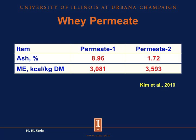Here's an example of why it's important to analyze for ash in feed ingredients. We have two different products, both called whey permeate. Whey permeate 1 contains 8.96% ash, but whey permeate 2 contains only 1.72% ash. We can see how that influences the concentration of metabolizable energy: permeate 1 contains 3,081 kcal per kilogram dry matter, whereas permeate 2, with the low ash concentration, contains 3,593 kcal ME per kilogram dry matter. This illustrates why it is important to determine the ash concentration, because it directly influences the amount of energy the animal can get out of the ingredients.